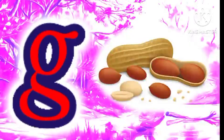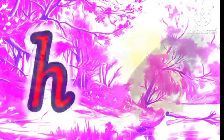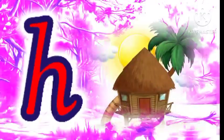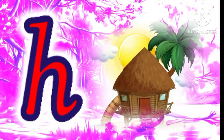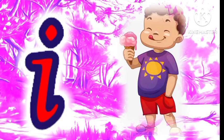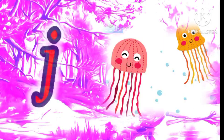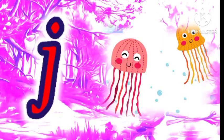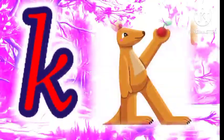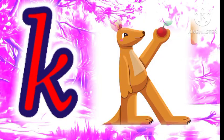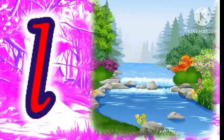G for groundnut, H for hut, I for ice cream, J for jellyfish, K for kangaroo, L for lake.